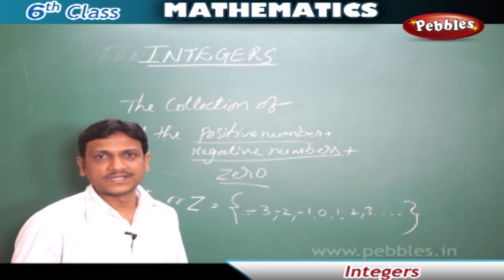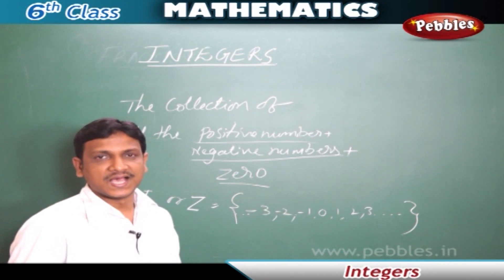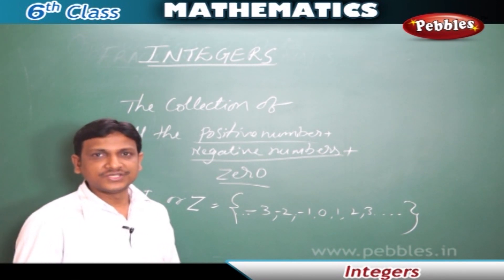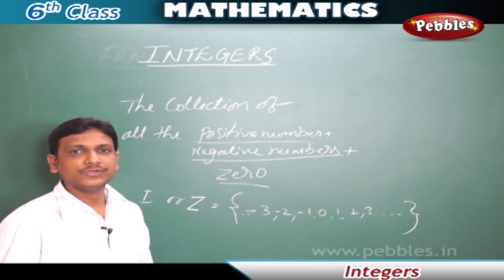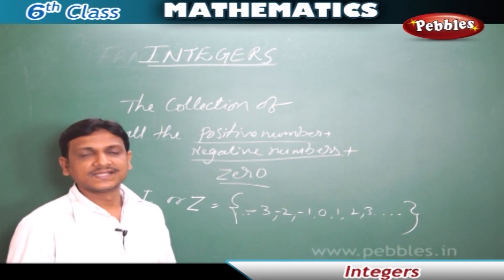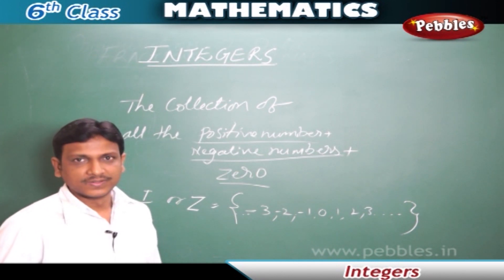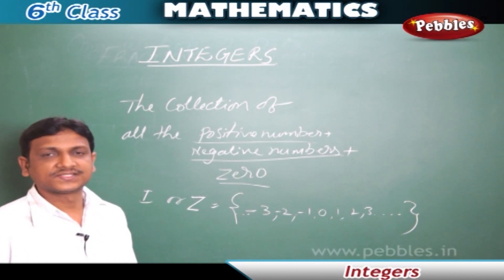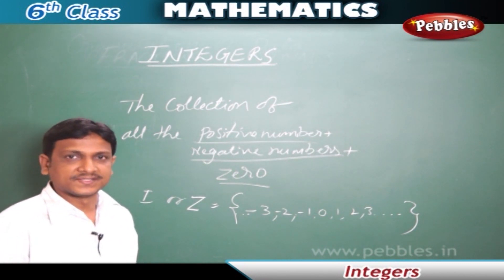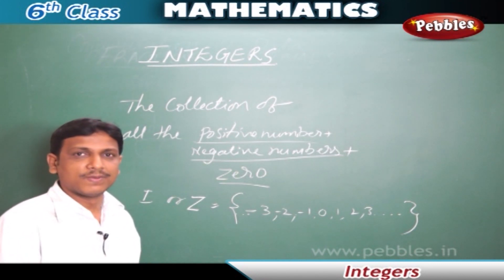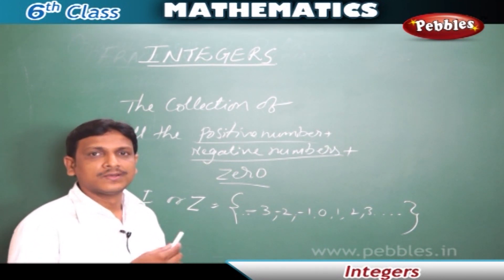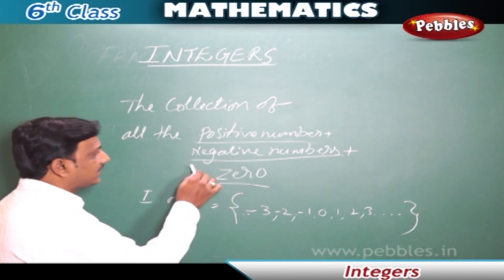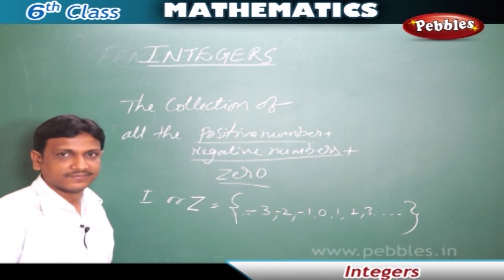When we talk about temperatures — high temperatures and low temperatures — to mention very low temperatures, we use a minus number. In the same way, when talking about past and future, when we go back, we use minus numbers. In this way, we use negative numbers in our daily life.